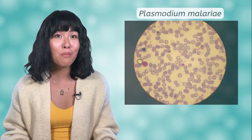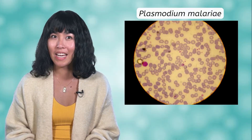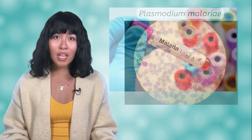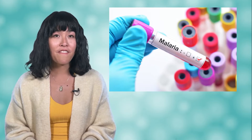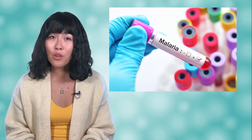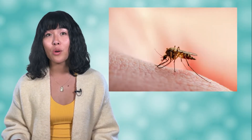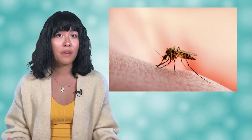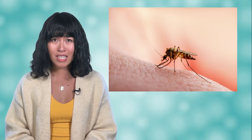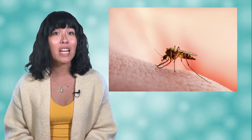The final phylum we'll look at is the Sporozoa. These protists cannot move on their own and are simply carried by hosts. Most are parasites on the organisms that carry them, such as Plasmodium, which causes malaria. This protist infects blood cells, causing serious and sometimes fatal illness. It's transmitted through mosquito bites, so if you're in an area with known prevalence of this particular protist, you'll want to be sure to wear insect repellent.